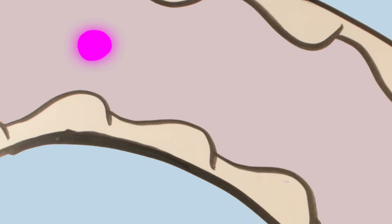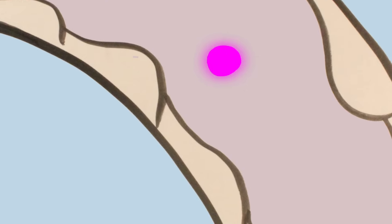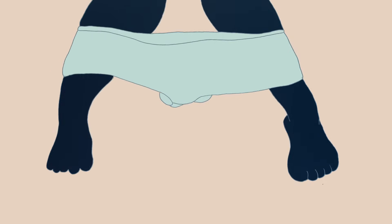As the zygote travels down the fallopian tube towards the uterus, looking for a place to nest, this tiny ball of cells divides and multiplies over and over. If the zygote does not find a good nesting spot in the uterine lining, it passes out of the body during menstruation or the period.